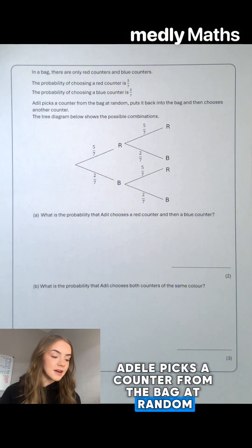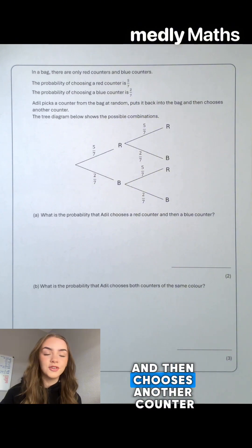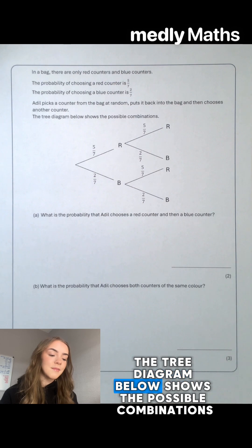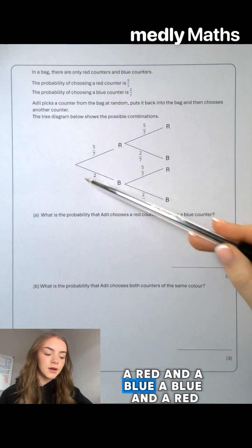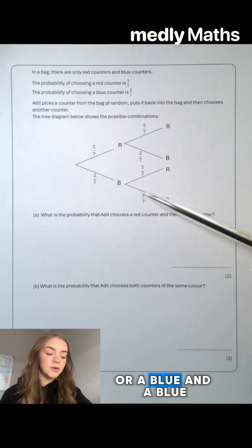Adil picks a counter from the bag at random, puts it back into the bag and then chooses another counter. The tree diagram below shows the possible combinations. So we could choose a red and a red, a red and a blue, a blue and a red, or a blue and a blue.